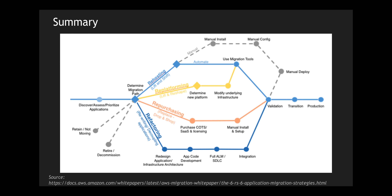Retaining your application means not changing anything and not moving it from your traditional server. Retiring your application makes sense when you've already taken bits and pieces of it and created a separate application, and you decide this application is no longer needed. I hope you're able to understand the different R's of an application migration strategy. Which one do you think fits your build? Let me know in the comments below. If you like the video, go ahead and like it, and if you haven't subscribed to the channel, go ahead and subscribe. Thank you very much.